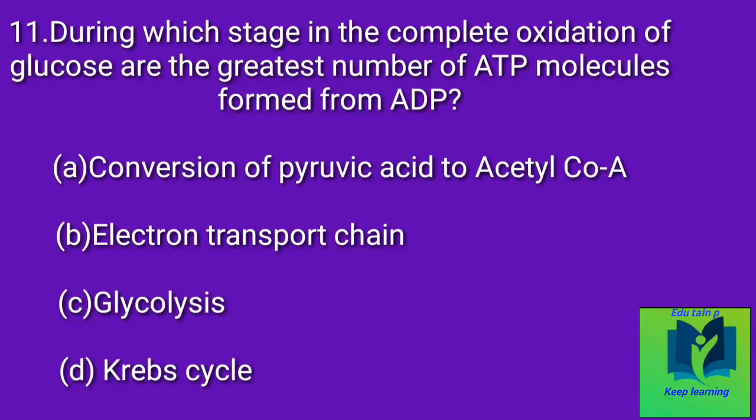During which stage in the complete oxidation of glucose are the greatest number of ATP molecules formed from ADP? Option A: Conversion of pyruvic acid to acetyl coenzyme A. Option B: Electron transport chain. Option C: Glycolysis. Option D: Krebs cycle. Answer: Electron transport chain.